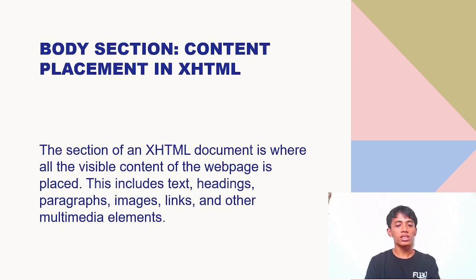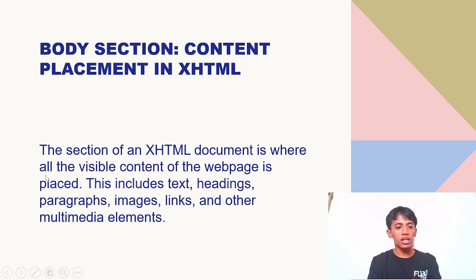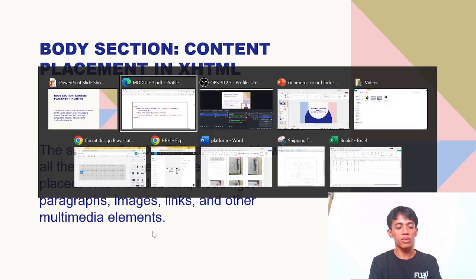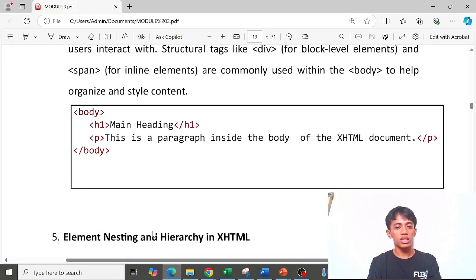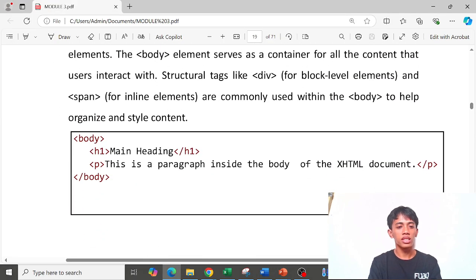Next is the body section — content placement in XHTML. The body section of an HTML document is where all the visible content of the web page is placed. This includes text, headings, paragraphs, images, links, and other multimedia elements. Here is an example of a body tag that contains our heading using the h1 tag and a paragraph using the p tag.